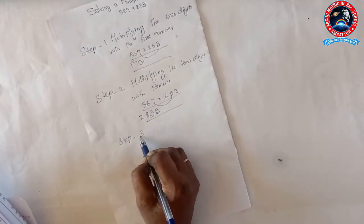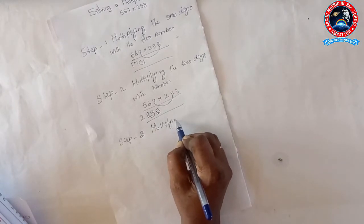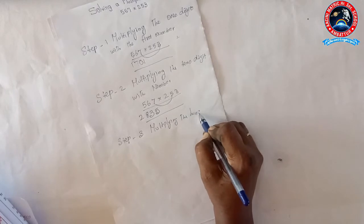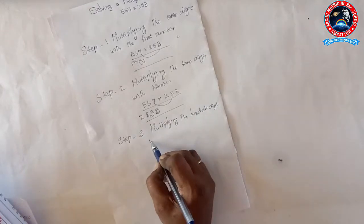Step 3: Multiplying the hundreds digit with the third number.